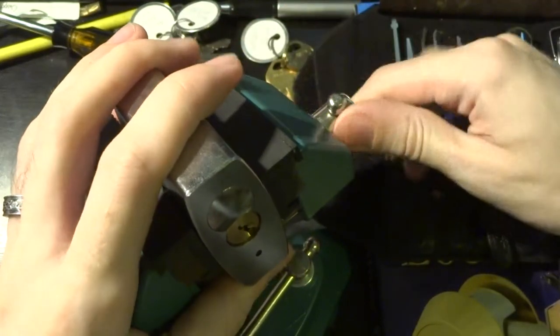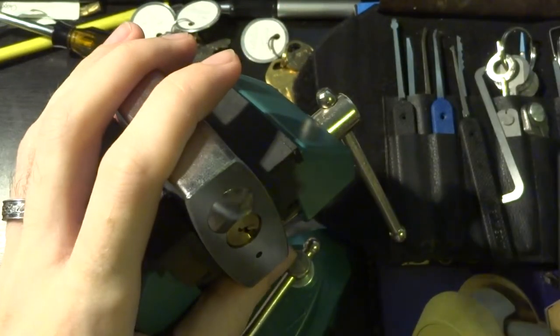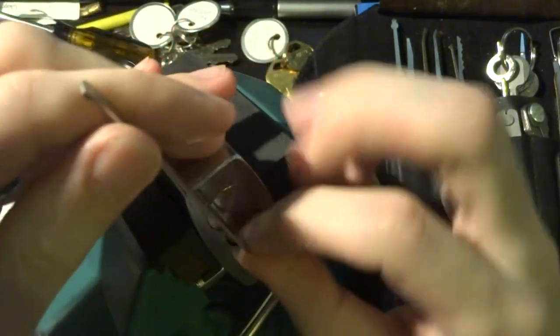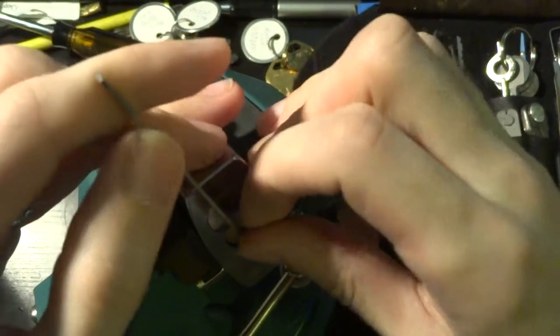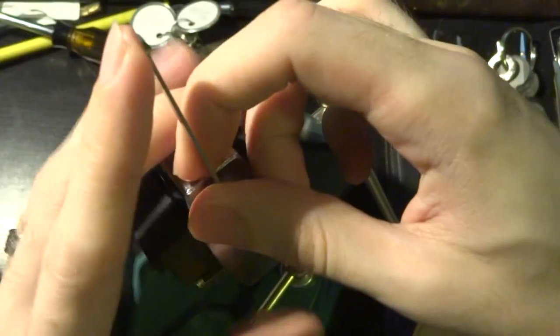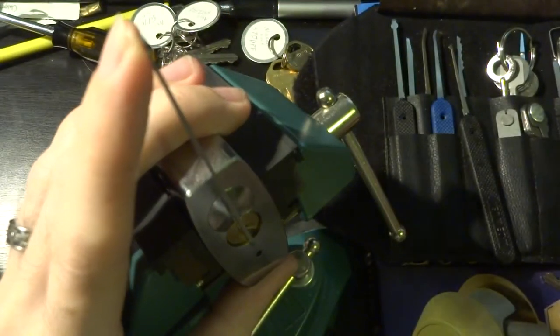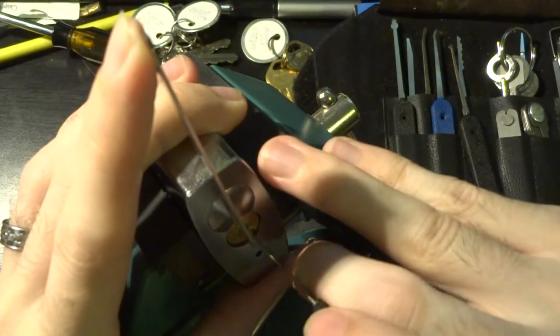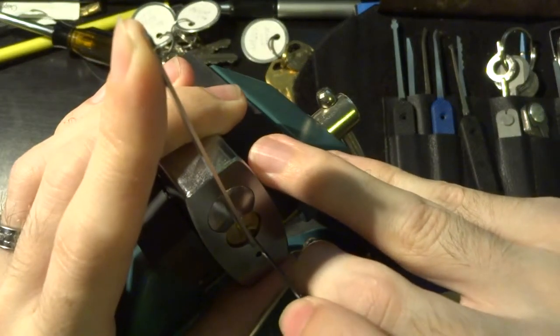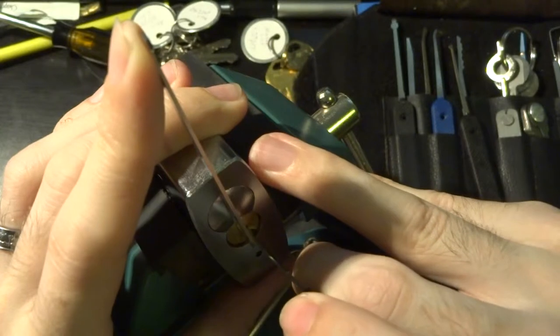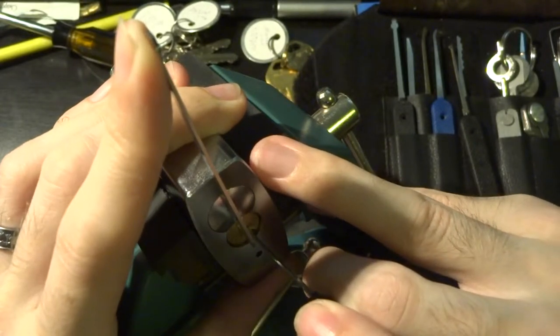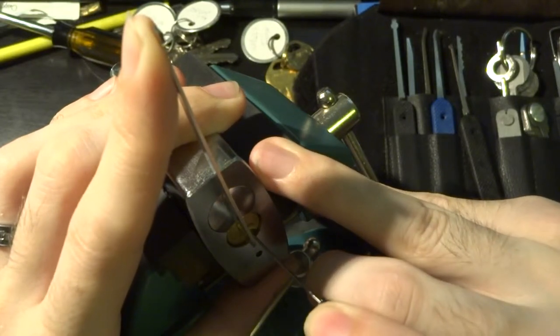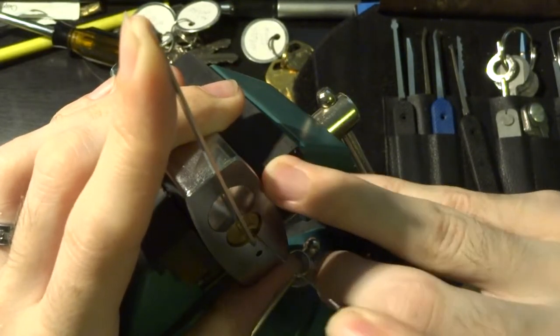This is probably take 18 or something at this point. I'm not even going to try to count, but we're going to start off with a modified Peterson pry bar that'll fit into that tight warding, and we're going to start off with a Peterson number one hook. We're going to be very careful here because it's very easy to inadvertently overset these pins.